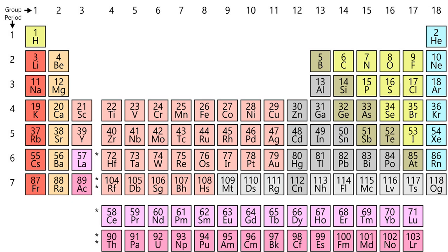A trend of decreasing electron affinity going down groups would be expected, as the additional electron will be entering an orbital farther away from the nucleus and would release less energy when added. However, in going down a group, around one-third of elements are anomalous, with heavier elements having higher electron affinities than their next lighter congeners. This is largely due to the poor shielding by d and f electrons. A uniform decrease in electron affinity only applies to group 1 atoms.